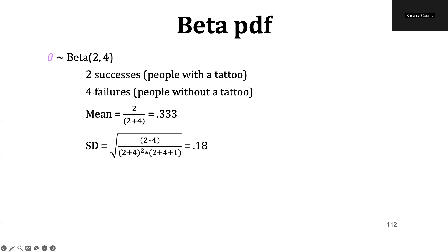So for example, if we consider the not probable model with the beta(2,4) distribution, this might mean that we would expect to observe two successes, in other words, two people who have a tattoo and four failures, in other words, four people without a tattoo if we were to ask six people.